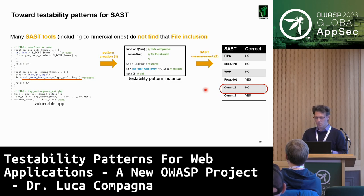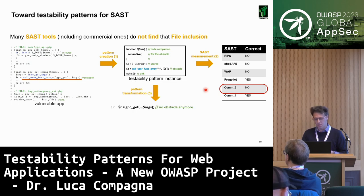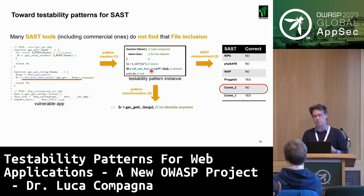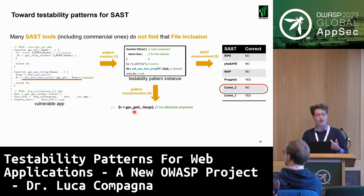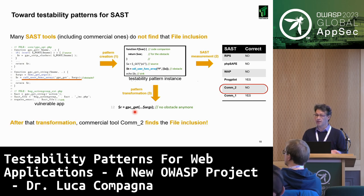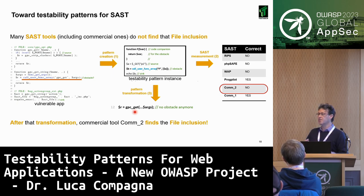To validate this, if you transform the dynamic call into a static one — calling the function directly — the obstacle disappears and the commercial tool is now able to discover the vulnerability. This is a very simple example of how you can remediate that obstacle.